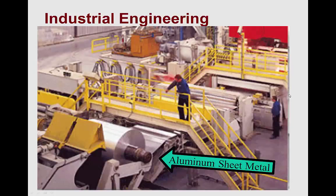Another area of engineering involved in production of the can is industrial engineering. Industrial engineers look at a number of things, including the workflow, material handling, economics of various processes, ergonomics, and human factors involved in operating the machinery. So they're pretty important too.